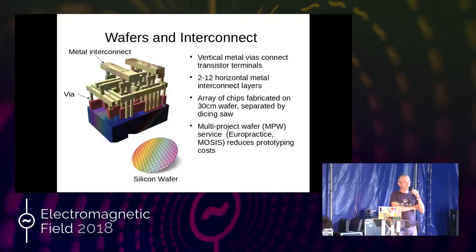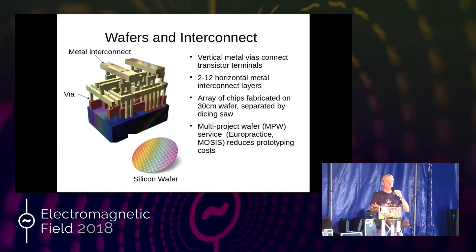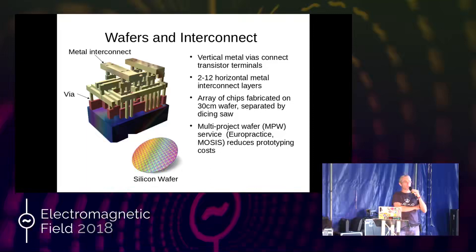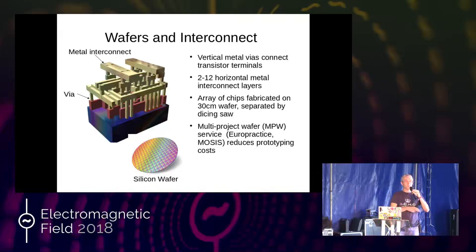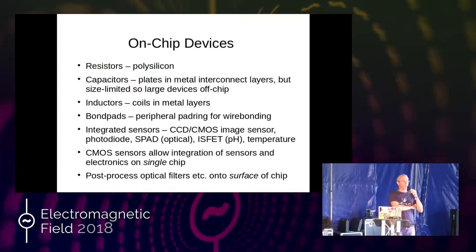Chips are fabricated on a silicon wafer, typically 30 centimeters in diameter. After fabrication, chips are separated using a dicing saw. The setup cost of a process is very high — on the order of a hundred thousand pounds. So if you're prototyping, as in the early-stage proof-of-concept work I do, you use a multi-project wafer (MPW) service, similar to PCB pool. The MPW service runs a wafer with a number of different chips, bringing the cost from £100,000 down to maybe £10,000–£15,000 — what a university research budget can afford.